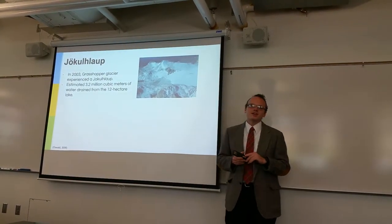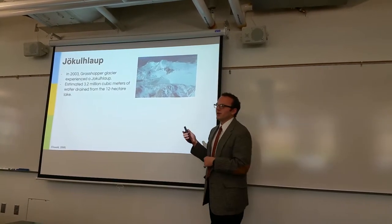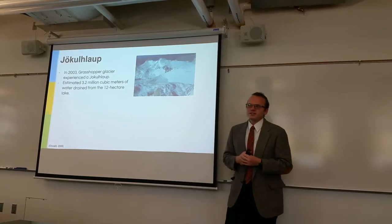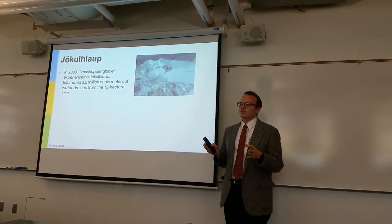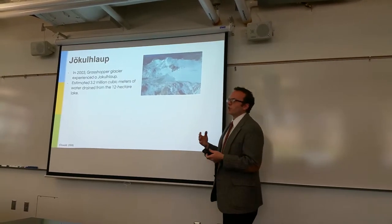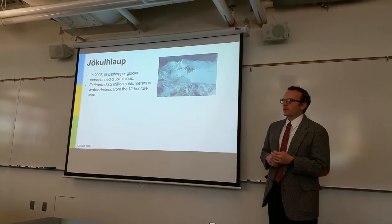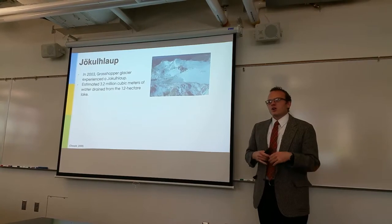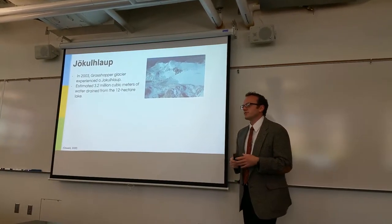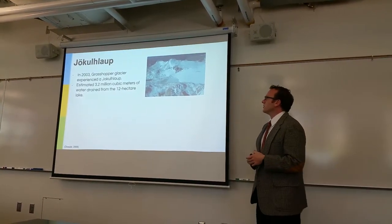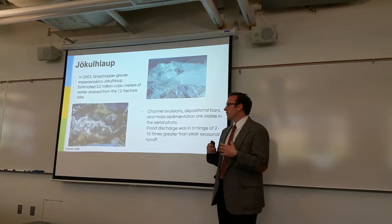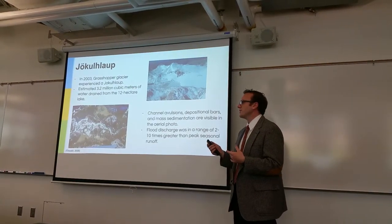One of the more interesting aspects of the glaciers in the Wind River Range is ice dam events, or jökulhlaups. In 2003, one was recorded in the Wind River Range: a 13-hectare lake drained over 3.2 million cubic meters of water that flooded through the system. This is one of those rare events that's happening more and more as glaciers recede and as the climate warms. More than likely there will be another one in the Wind River Range, as there are over 47 peaks in excess of 13,000 feet elevation with glaciers on top. When this ice dam broke, it flooded the valley and created many different types of sediment structures not normally seen in the Wind River Range.